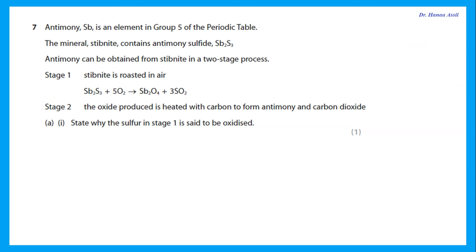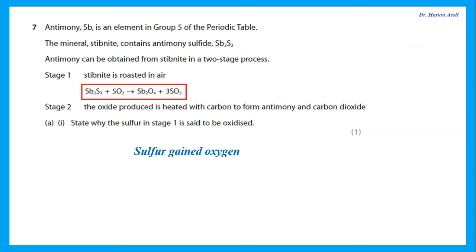Question 7: Antimony is an element in Group 5 of the periodic table. The mineral contains antimony sulfide. Antimony can be obtained in a two-stage process: roasted in air to give the oxide plus sulfur dioxide, then the oxide is heated with carbon to form antimony. State why sulfur in stage 1 is said to be oxidized: sulfur was in antimony sulfide and changed into SO₂ — the sulfur gained oxygen, so it is oxidized.